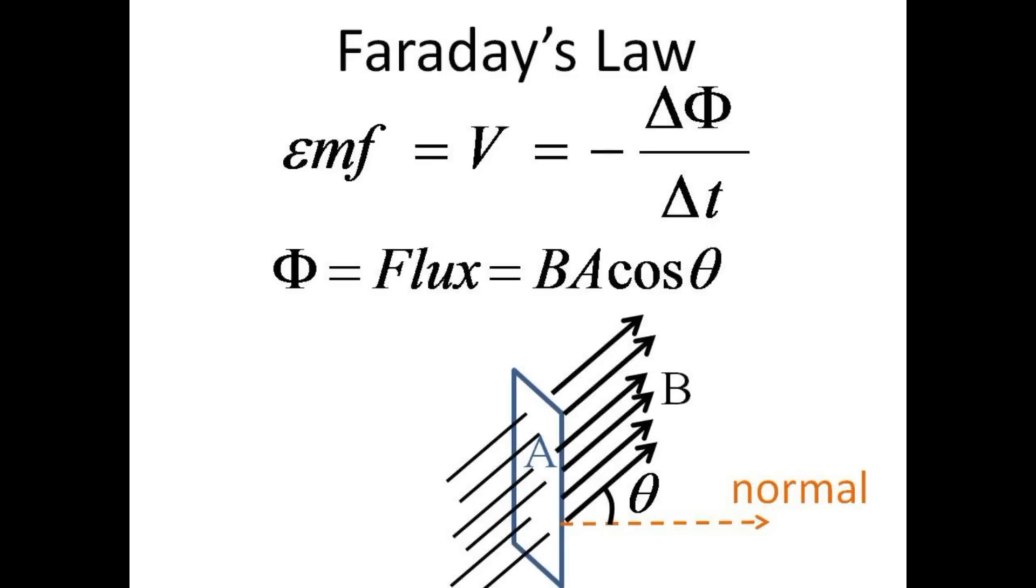Magnetic flux phi is defined as the product of the B field times the area A of the surface through which the field passes times the cosine of the angle between the field and the normal to the surface.